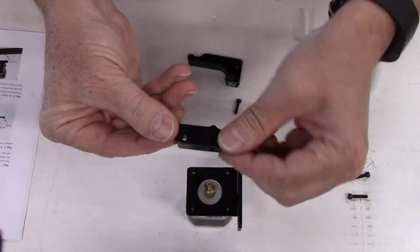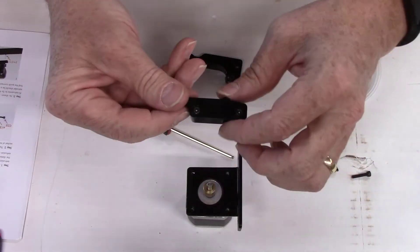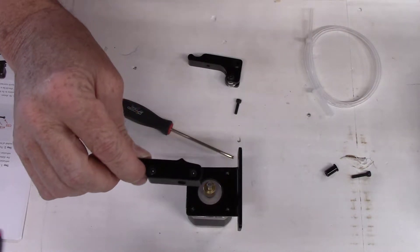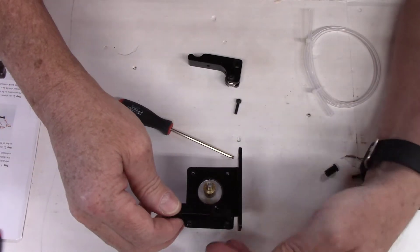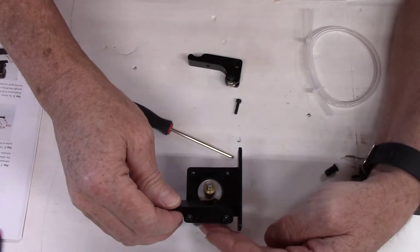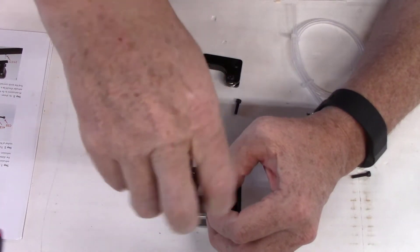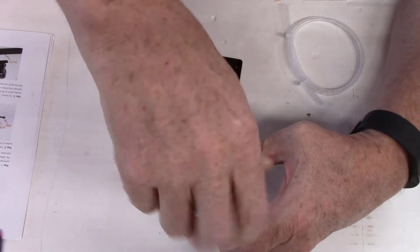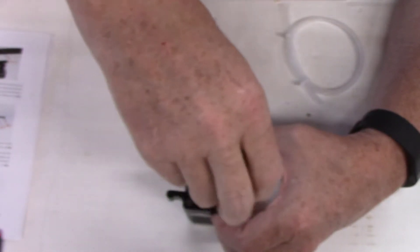The whole thing fixes together with these M3 by 16 millimeter screws. They go through this top guide and into the mounting bracket and then into the actual motor. I'm just going to loosely fit everything until I get it all assembled, and then I'll go back and snug everything down.